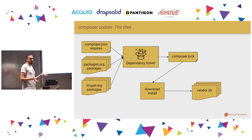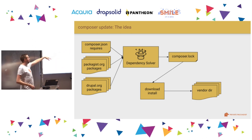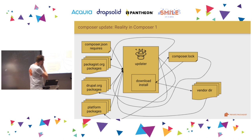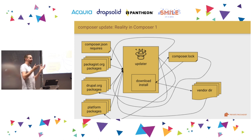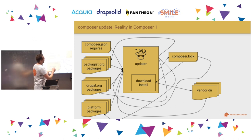So how does a Composer Update work? The basic concept: we have our composer.json requiring a few things, packages on packagist.org or Drupal.org, a magic dependency solver, and out comes the composer.lock. Then we download and install everything in the vendor directory. In Composer 1, the code doing the installing was kind of the same function as doing the updating, making it a mess. The dependency solver reads from packages while solving dependencies, and the vendor directory is used as input to the solving. There were two problematic ideas in Composer 1 that led to this chaos.